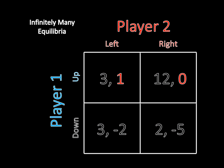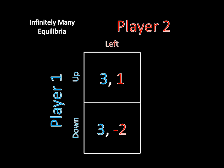If Player 1 is playing up, then Left is better than Right because 1 is better than 0. And if Player 1 is going down, then Left is still better than Right because -2 is better than -5. So Player 2 should never want to play Right. She should always want to play Left. That's a strictly dominant strategy.